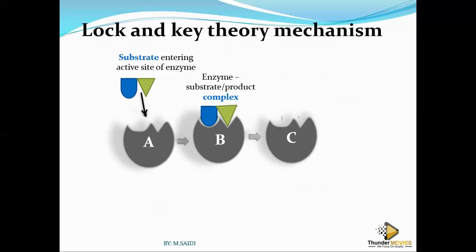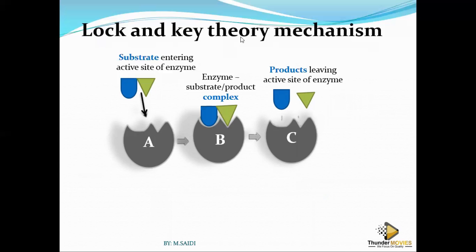Now the products leave the active site — the enzyme has opened the lock and the key is removed. The products leave the active site of the enzyme after being broken down. After that, the products have been formed. What we wanted was for this substrate — this food — to be broken down using this enzyme. Now they are done being broken down, they are freed, and the enzyme goes back to be used over and over again.